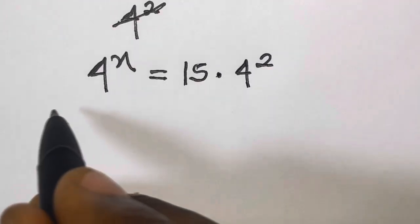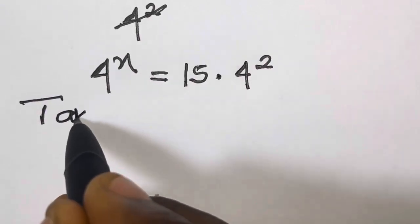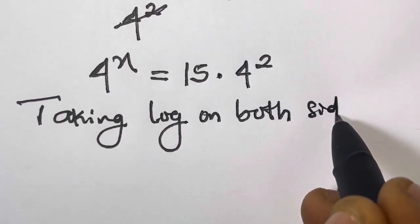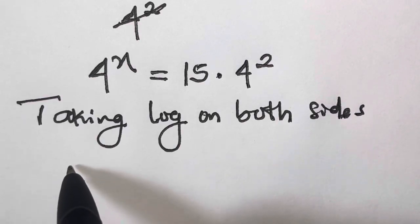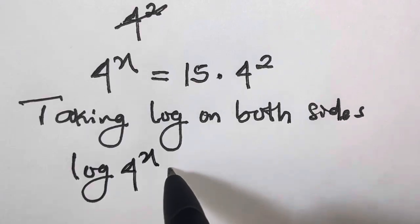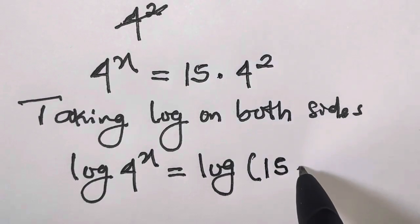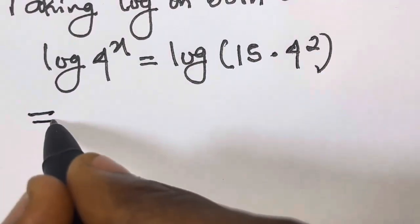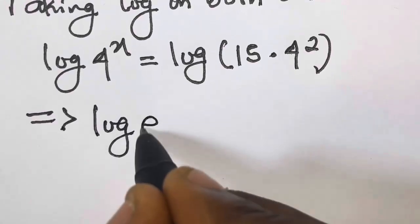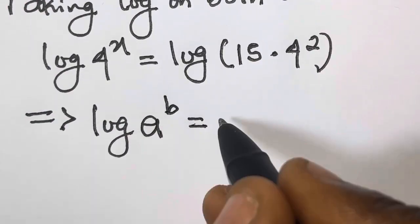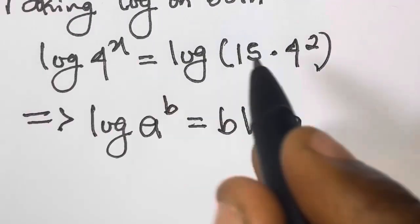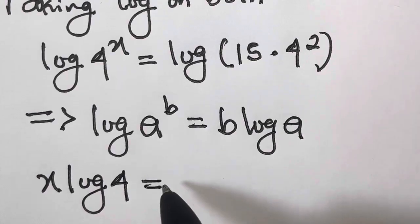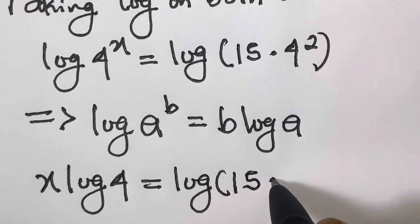So here, by taking log on both sides, we are going to have log of 4 raised to the power x equals log of 15 times 4 raised to the power 2. But let's recall that if we have log a raised to the power b, from the law of logarithm, b comes forward: we have b log a. So applying this, we will have x log 4 equals log of 15 times 4 raised to the power 2.